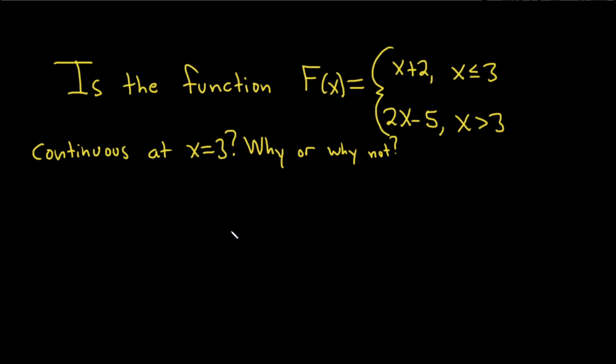Is the function F(x) continuous at x equals 3, y or y not? So in order to check this, we'll just go basically through the definition of continuity. So we say f is continuous at x equals c, in this case c is going to be 3, if, and there are three conditions.